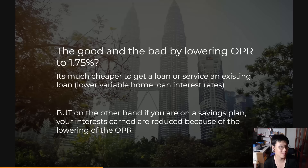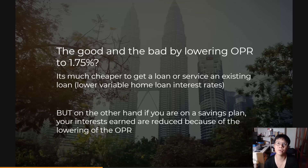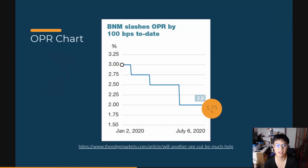The good thing is that because the OPR has been slashed to 1.75%, it's a lot cheaper to get a loan or to service an existing one, because the interest rates are a lot less compared to what they were. On the other hand, if you have a savings plan with the bank and have reserves piled up there, your interest earned would be less at this time. That trade-off is very obvious.